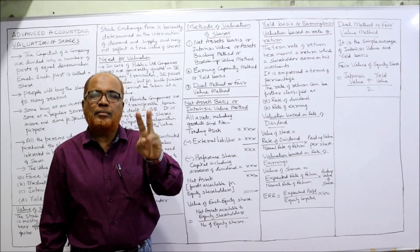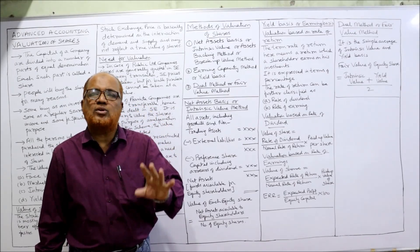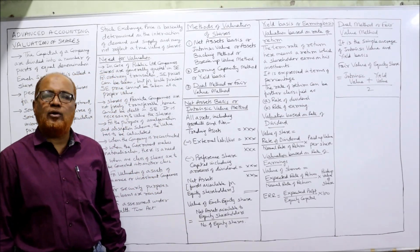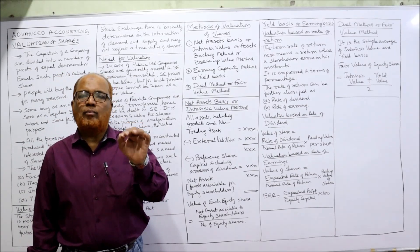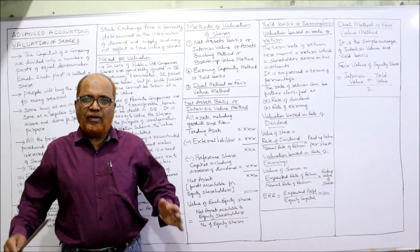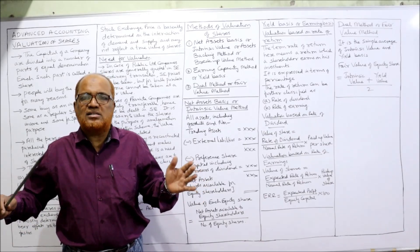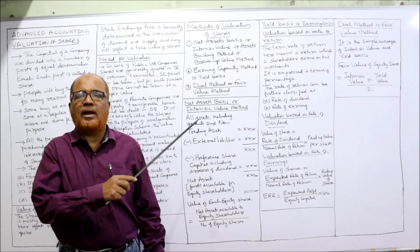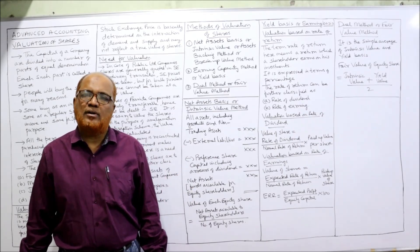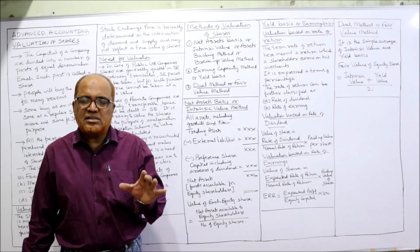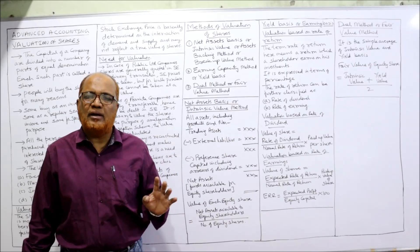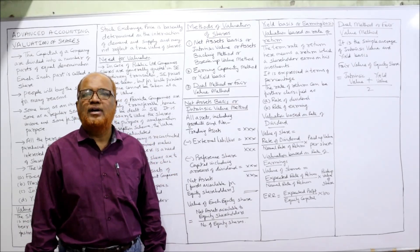The third method is simply the average of the first two. The net assets method or intrinsic value method is mostly applied when a large number of shares are purchased in bulk quantity. It is a straightforward method to find the book value of a share, and it considers the balance sheet — the assets and liabilities — to find out the value of equity shares.